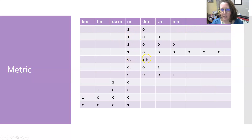Conversely, one decimeter is a tenth of a meter. One centimeter is a hundredth of a meter. One millimeter is a thousandth of a meter — that's why the decimal point is placed right there after the zero.